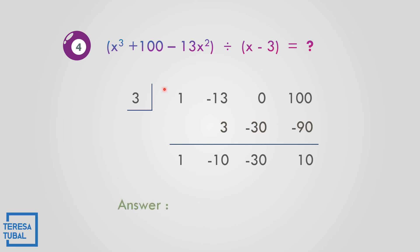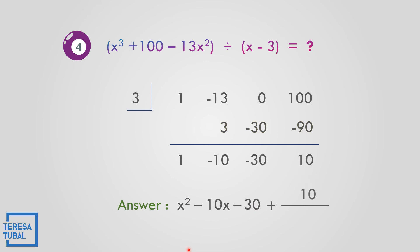The quotient: x cubed divided by x is x squared, so the quotient is x squared minus 10x minus 30, with remainder positive 10 all over the divisor x minus 3. The final answer is x squared minus 10x minus 30 plus 10 over x minus 3.